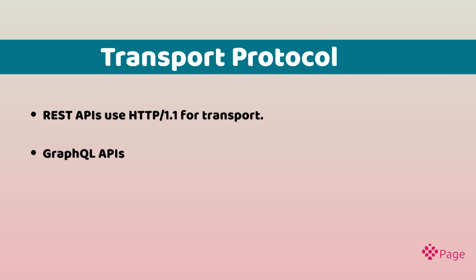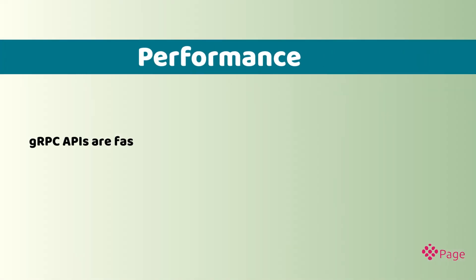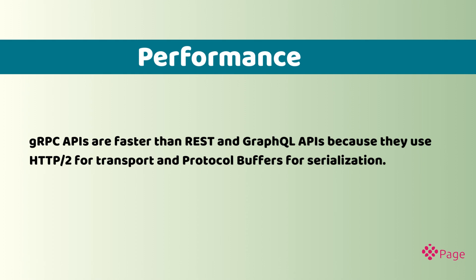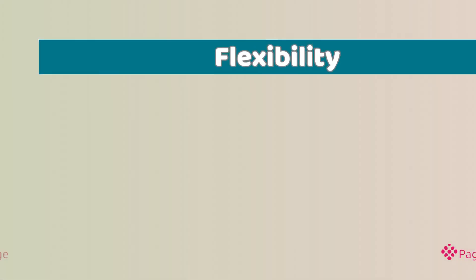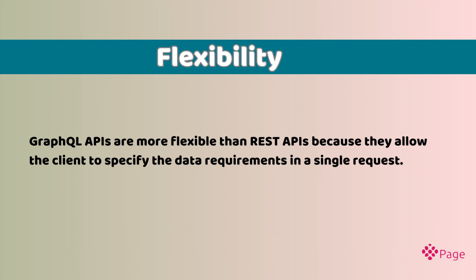Regarding transport protocol, REST APIs use HTTP/1.1, GraphQL APIs use HTTP/2, and gRPC APIs are faster than REST and GraphQL APIs because they use HTTP/2 for transport and protocol buffers for serialization. In terms of flexibility, GraphQL APIs are more flexible than REST APIs because they allow the client to specify the data requirements in a single request.